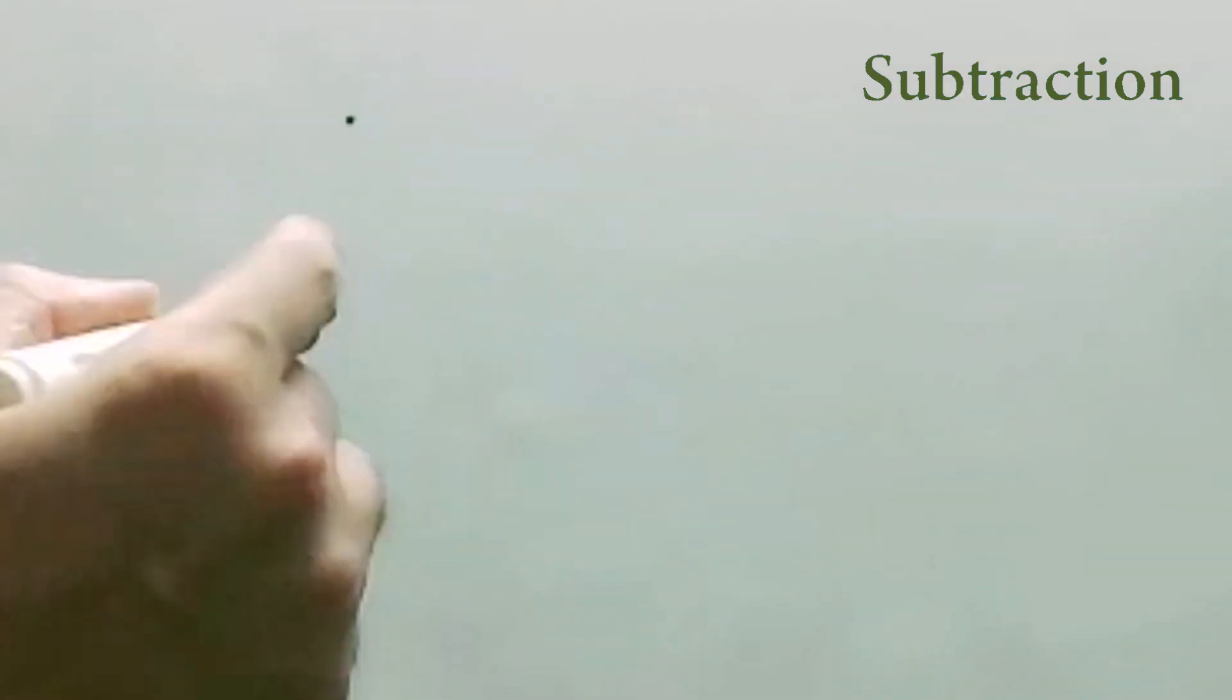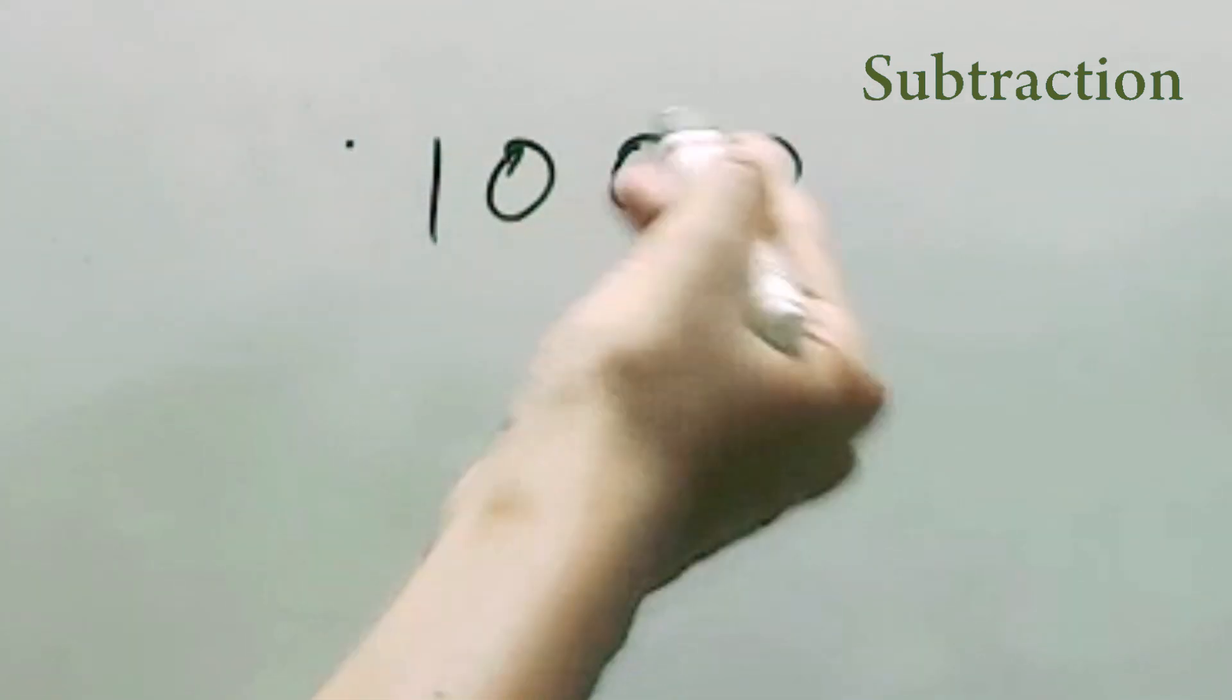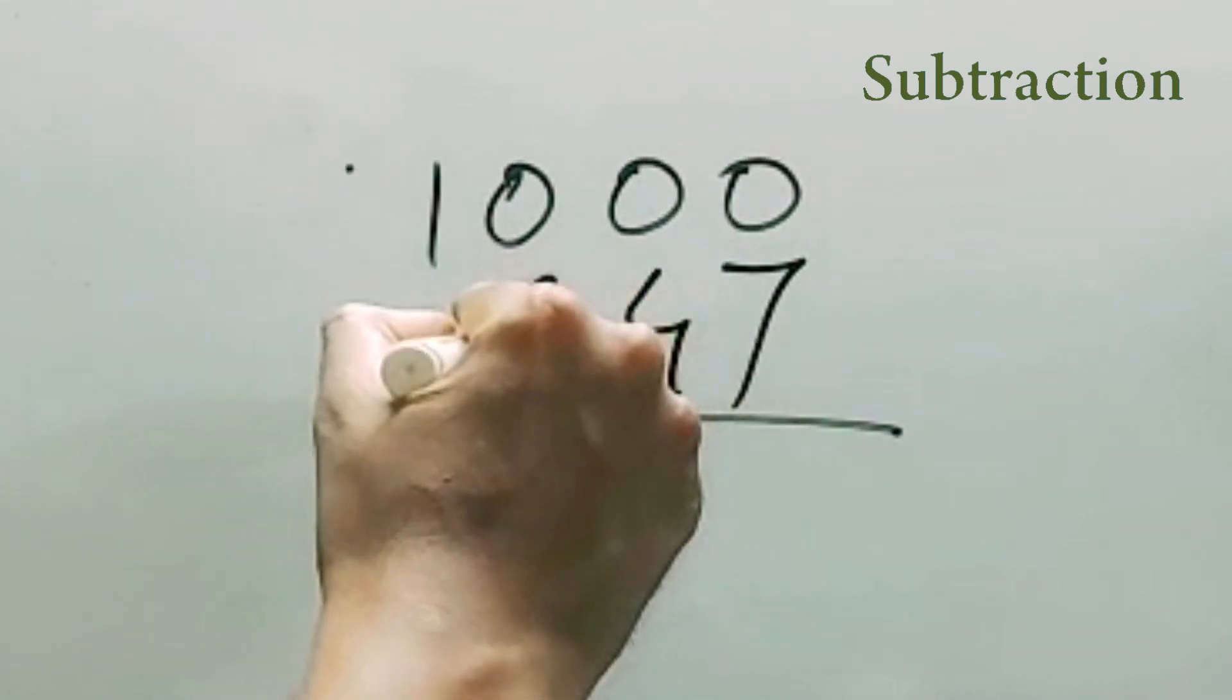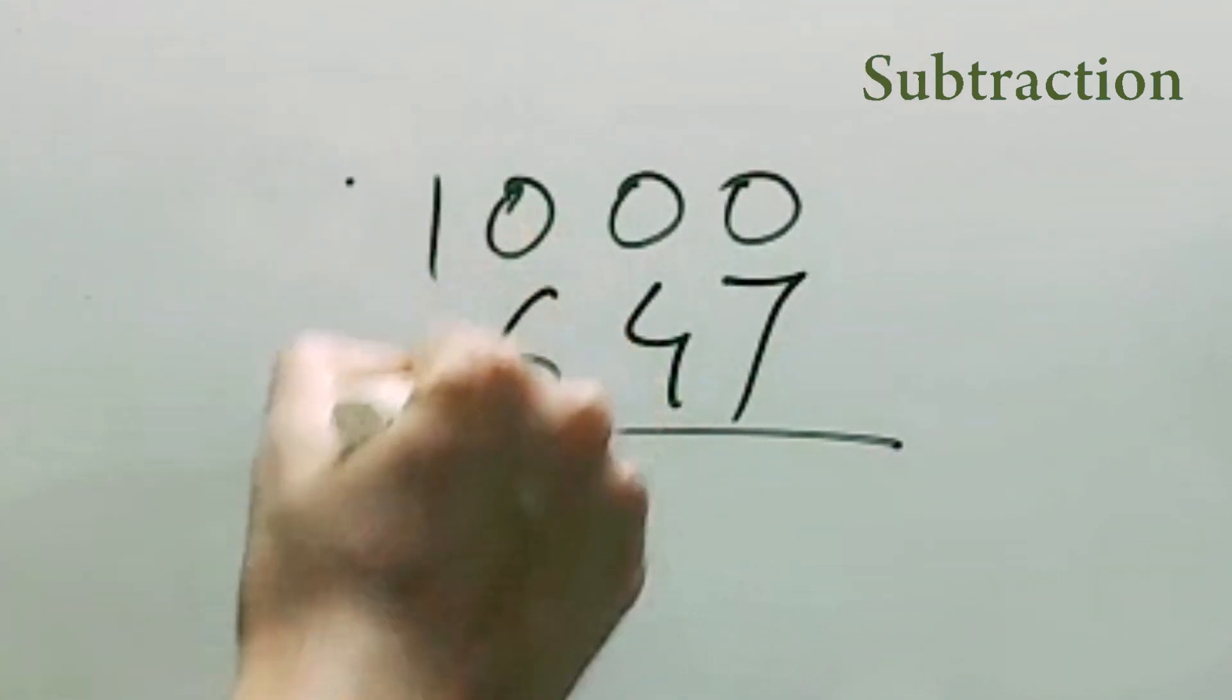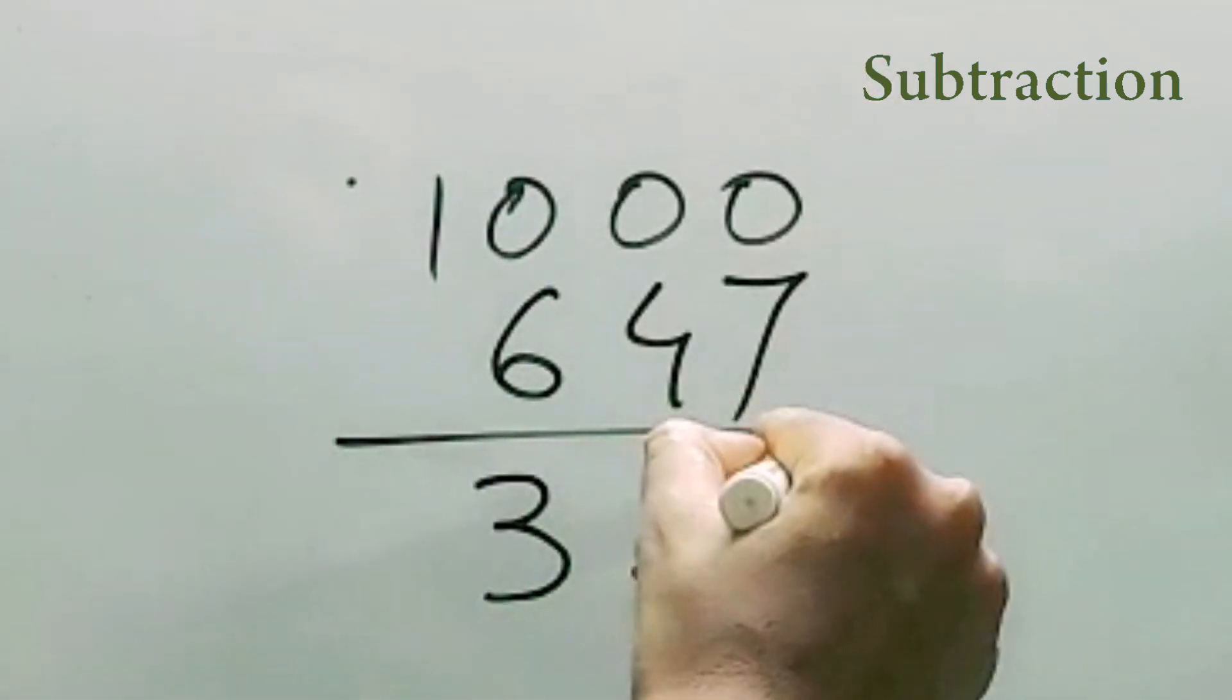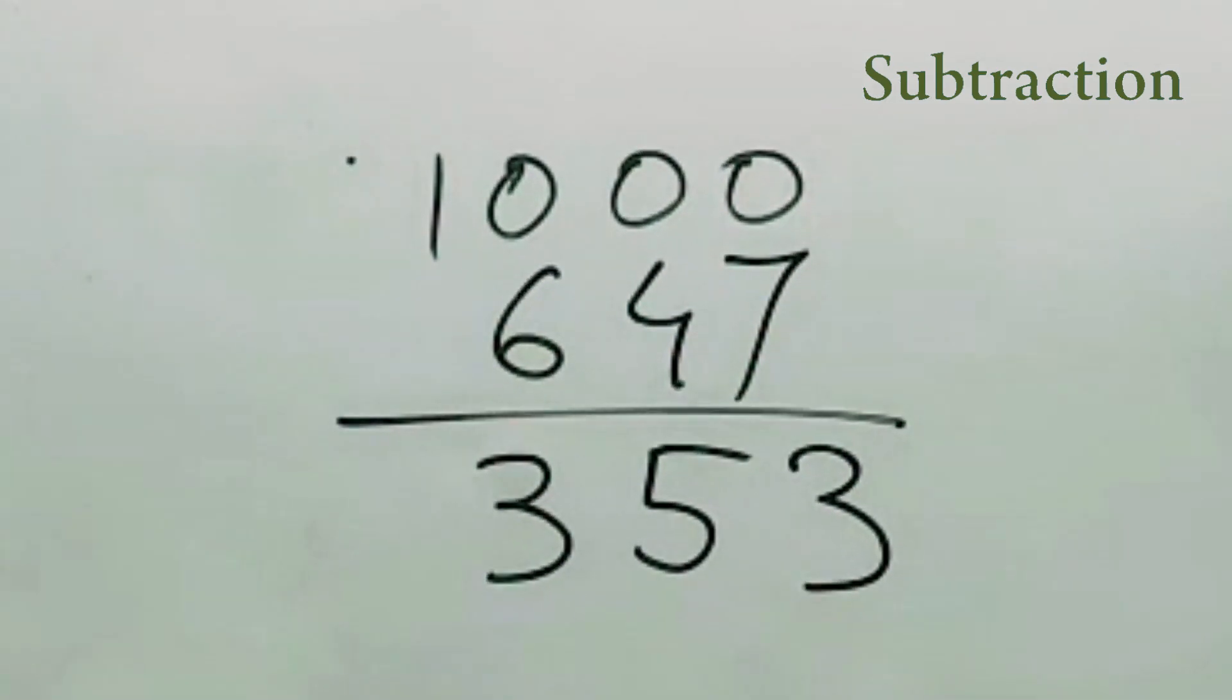If you have to subtract anything from 1000, simplest way, from any number, like 647. So first one you just have to deduct from 9, second one from 9, and third one from 10. So 6 plus 3 is 9, 4 plus 5 is 9, 7 plus 3 is 10. That's it. Simple. You like it?